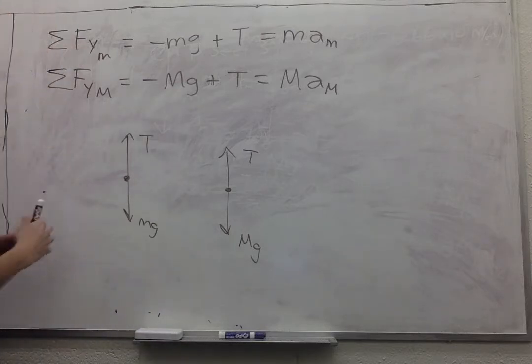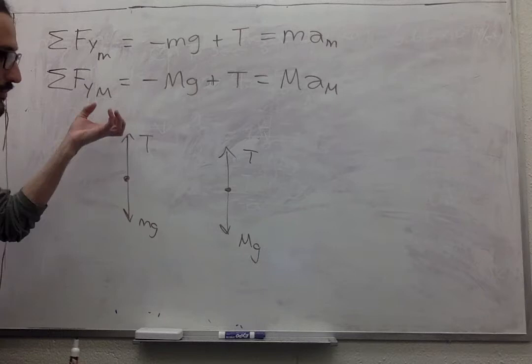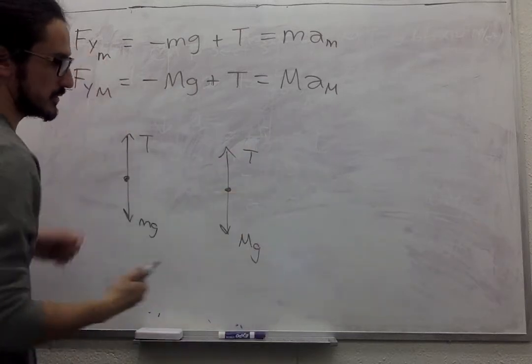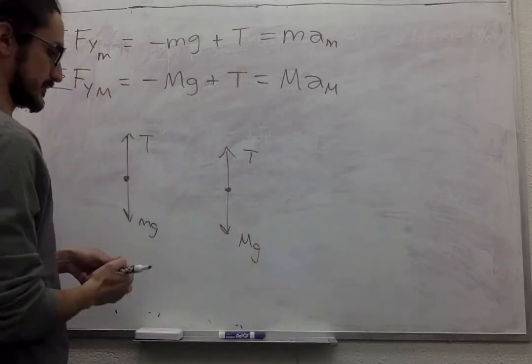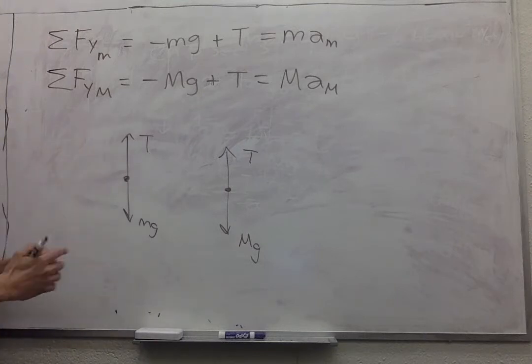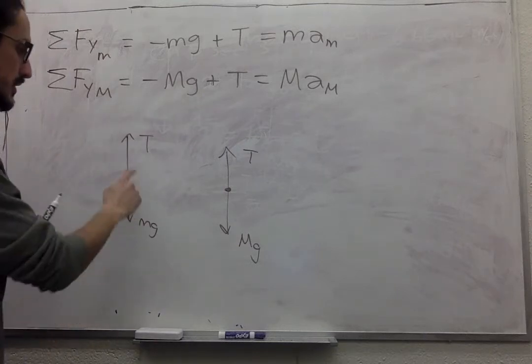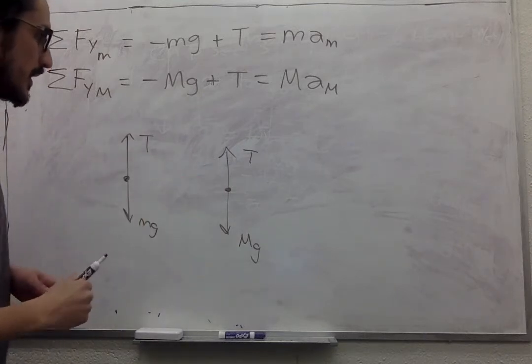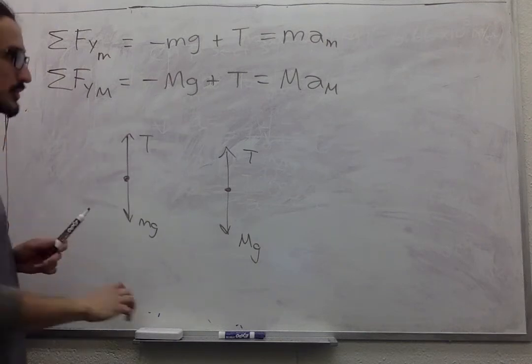And of course if this one moves up, this one is going to move down at the same rate and vice versa. They are constrained to have the same acceleration because they are joined by the rope.